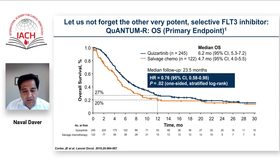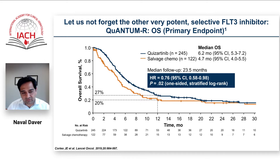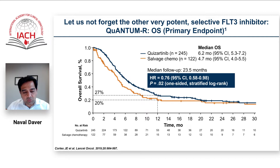Another FLT3 inhibitor to mention is quizartinib — a very powerful FLT3 ITD-targeted drug that did show improvement in both response rates and survival in the relapsed/refractory phase 3 Quantum-R study. Unfortunately, it has not been approved yet in the US or Europe, although it was approved in Japan. There is now a frontline study called Quantum-First, of 7+3 plus quizartinib versus 7+3, that has completed accrual, and we hope to see those results very soon.